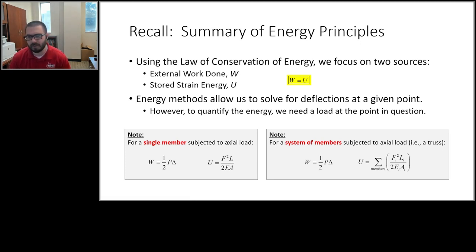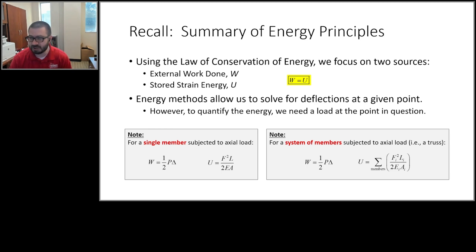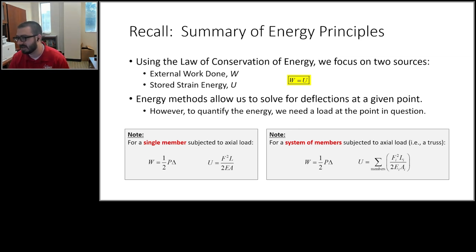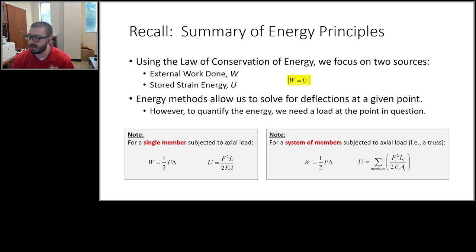When we compute deflections in trusses, we treat it like a conservation of energy problem. The external work done to the structure — which is a function of the applied load and the amount it deforms — has to equal the stored strain energy each member contains. We derived expressions for external work W and stored strain energy U for a single member as well as a system of members. There's an important difference between the applied load P and the internal force F in a member.